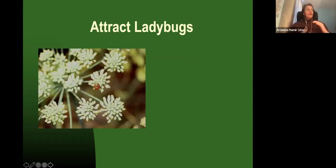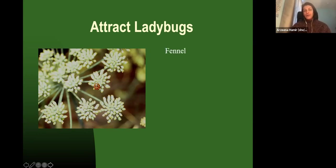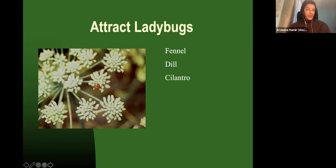Going back to the idea of preventing pests from happening in the first place: one way is to sit back and let nature take its course. Nature often provides time for the pest to flourish so there's enough for predators to come in and eat them. Ladybugs are probably the most popular and recognized, and are really good for aphid control. To bring ladybugs into your garden, you want to plant a lot of plants in the umbellifer family, which has these umbrella-shaped flowers — for example, fennel, dill, or cilantro, which in springtime always goes to flowers.